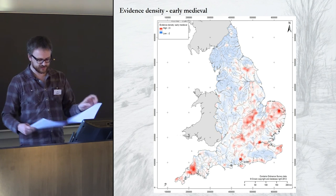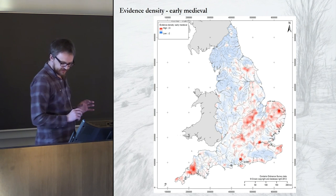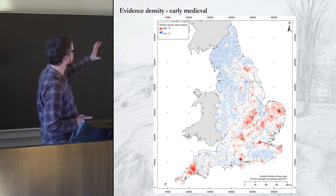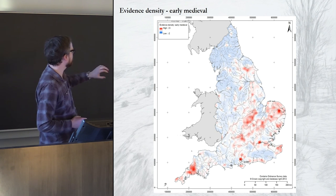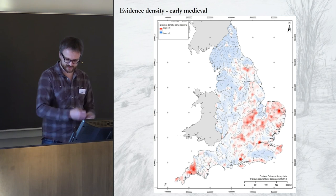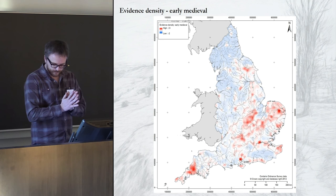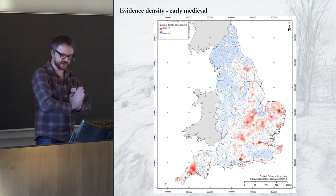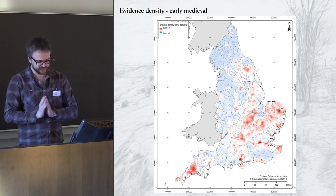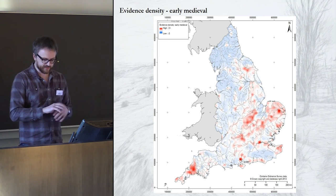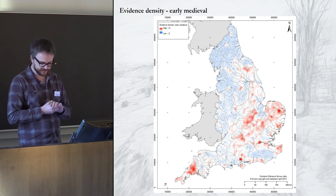Moving on to the post-Roman early medieval period, you see quite a relatively different pattern — it's kind of split into two zones. There's a slightly less high-value eastern zone, and then down in the southwest there's another zone that starts popping out. Overall, the Iron Age and Roman patterns look similar, but with a wider spread of denser activity in the Roman period, while the early medieval period looks a bit different, though still with a quiet north of England and West Midlands.